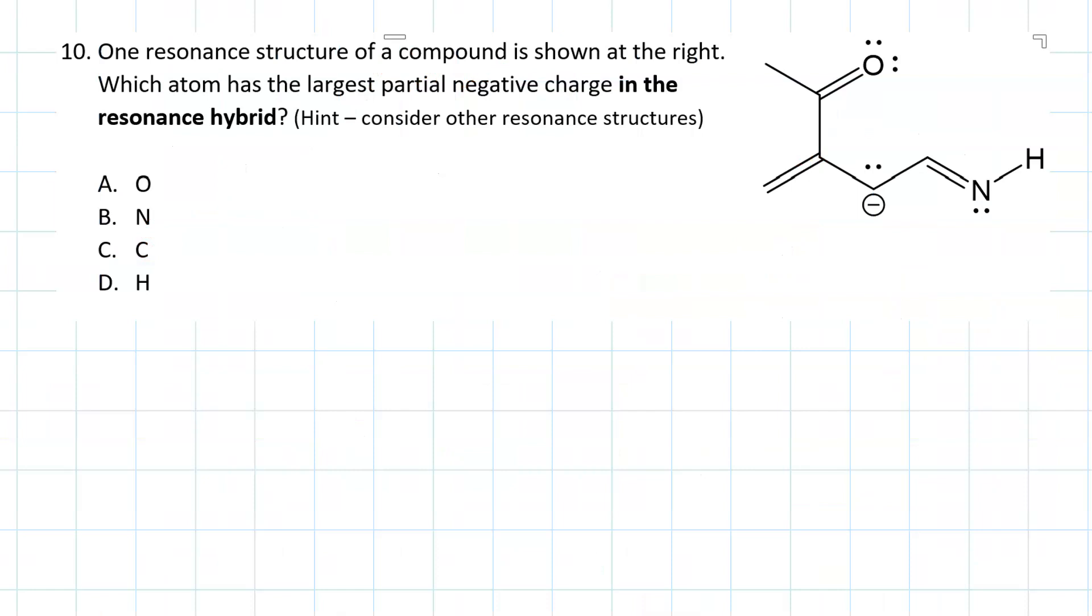Here's an old test question that gives you an example of how to use evaluating resonance structures. The question asks, in the resonance hybrid of the structure given at the right, which atom has the largest partial negative charge? So, what you do is you draw all the resonance structures that have a negative formal charge on some atom, and then whichever one is most stable, the atom that is negative in that one will have the largest partial negative charge.